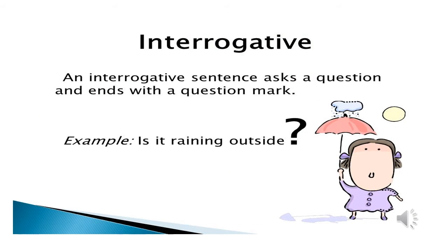The next question that comes in our mind is what is an interrogative sentence? An interrogative sentence asks a question and ends with a question mark. For example: is it raining outside?